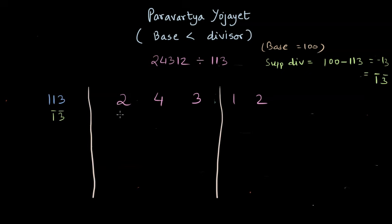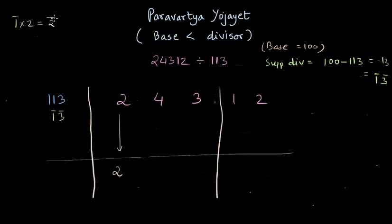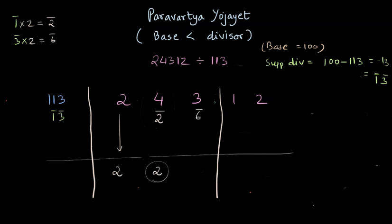We pull down the 2 and multiply it with the first digit of the supplement divisor, minus one: minus one times 2 gives minus two, written as bar over 2, starting from the second digit of the dividend. Then we multiply 2 by minus three, giving minus six, written below the third digit. Combining 4 and minus 2 gives 2. We then multiply 2 again by minus one and minus three, getting minus two and minus six, written below the third and fourth digits respectively.